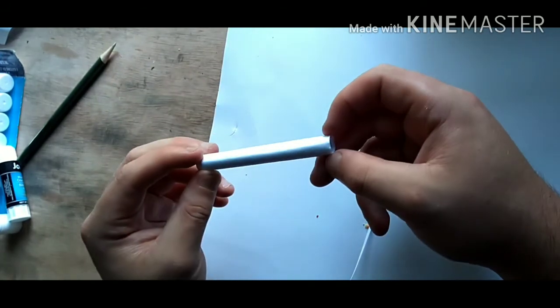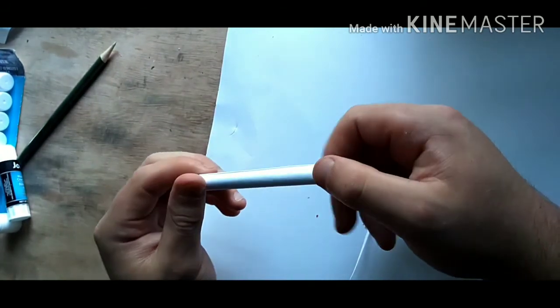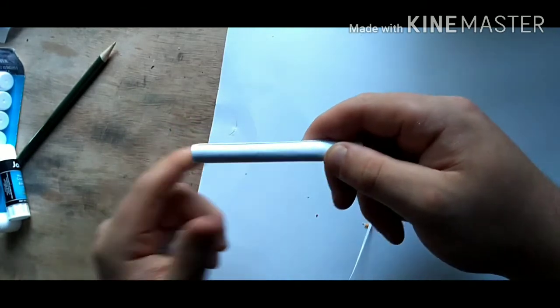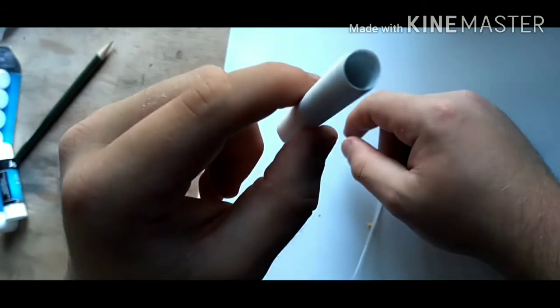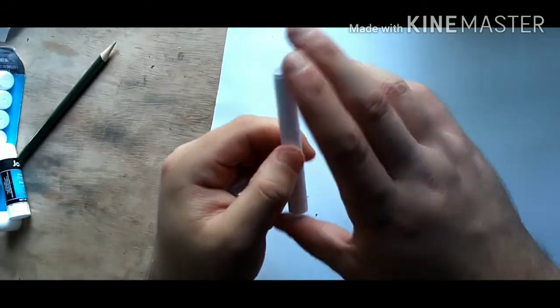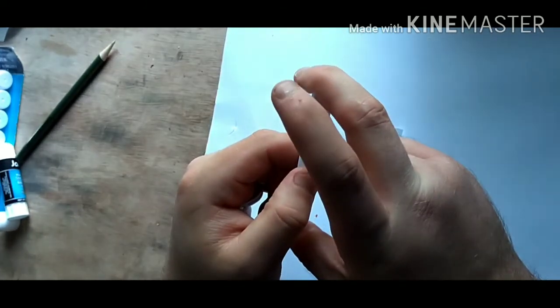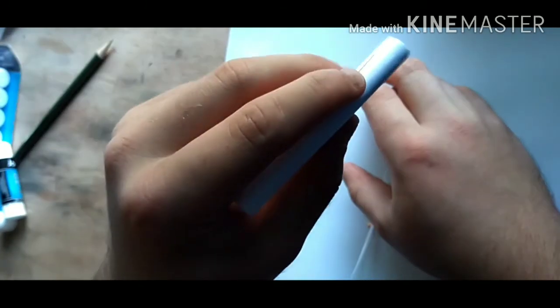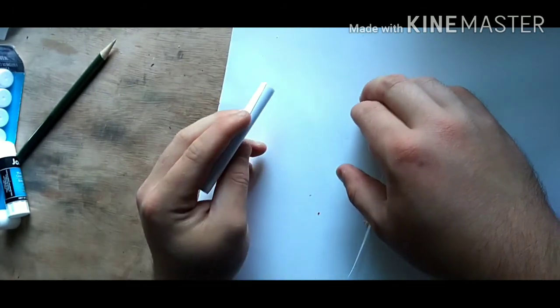Yeah, that is how you make prop cigarettes. You can color like the ends of them and stuff. Mine came out a little too big, but I'm still trying at it. So yeah, that is how you make fake cigarettes. Thanks for watching. See you in the next video. Later.